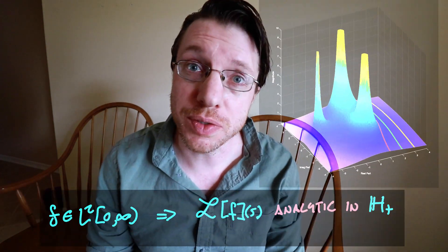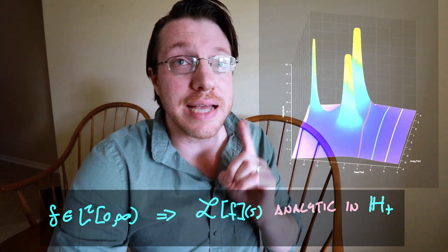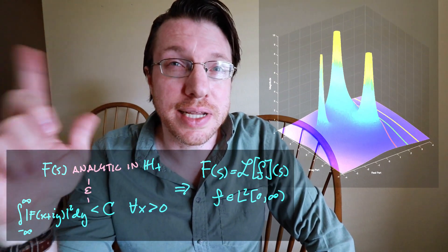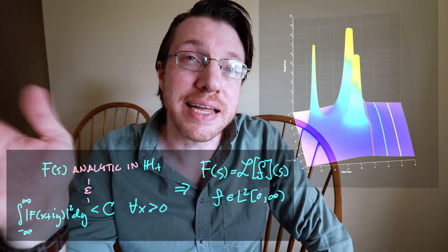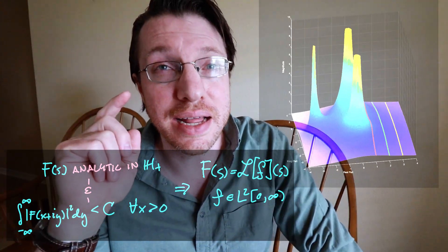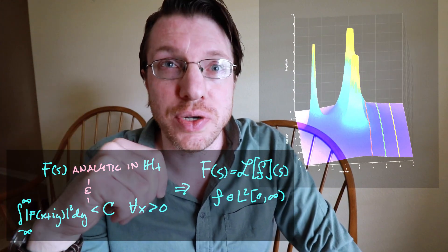Remember, if we have an L2 function and we take its Laplace transform, then we know that the result is an analytic function in the right half of the complex plane. The idea of the Paley-Wiener theorem is that we can go backwards: if we have a function that is analytic in the right half of the complex plane, and along every single vertical line the function restricted to that line gives us an L2 signal, then there is an L2 signal for which this analytic function is its Fourier transform.